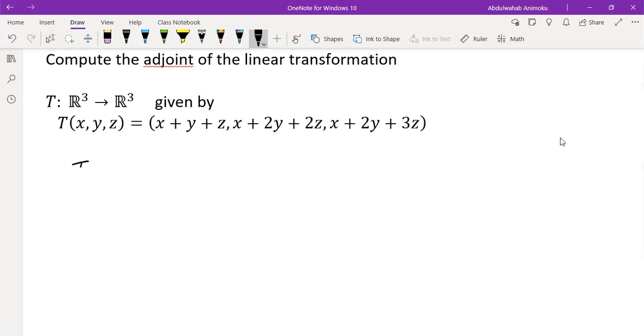We are looking for the adjoint of this transformation, which is basically this transformation T star from R³ to R³. Now there's a theorem that states the relationship between T and T star through a matrix method, and that's what we're going to use for the solution of this particular problem.